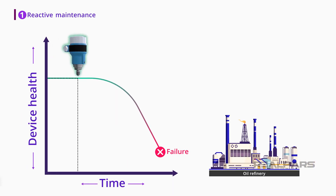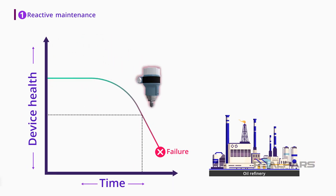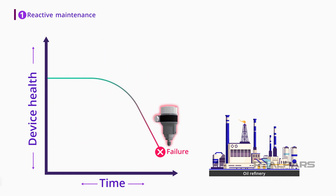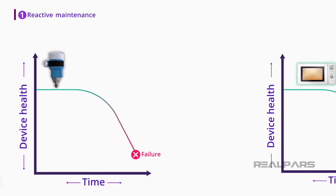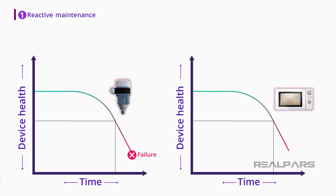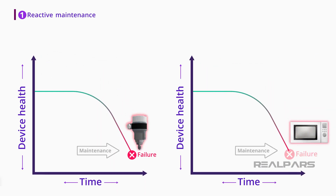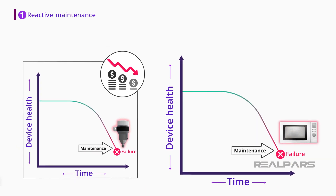For example, if you wait for a pressure transmitter to fail and then perform maintenance on it, there might be considerable financial losses. This is because every minute of interruptions in the manufacturing process may cost hundreds of thousands of dollars, if not more. So reactive maintenance may work fine for your microwave oven, but it is probably not the best choice for industrial processes.